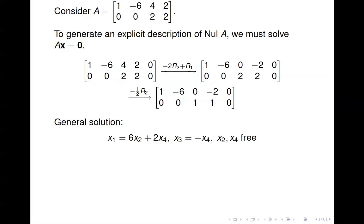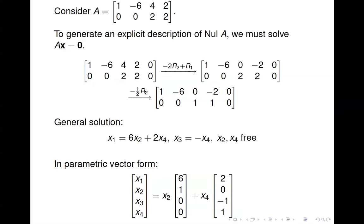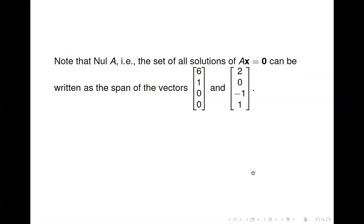x₂ and x₄ are free variables. If we put it in parametric vector form, we have x₁ = 6x₂ + 2x₄, x₂ = x₂, and so forth. Notice that any vector in the null space of A is a linear combination of these two vectors. So any vector in the null space of A is in the span of those two vectors.